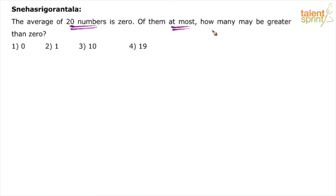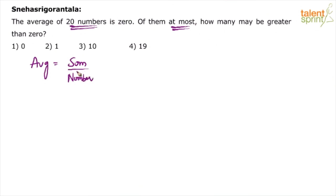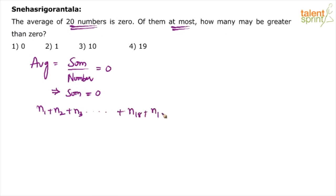At most means what — maximum. Understand from the first statement: the average of 20 numbers is 0. What do you get from that? The sum of these 20 numbers is zero. Average equals sum of numbers divided by number of values. So average equals 0 implies sum equals 0. So the numbers n1, n2, n3... up to n20, their total sum is zero.